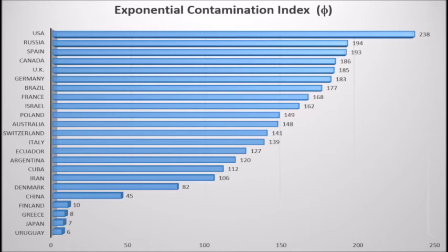We have very large numbers in this case, even for Brazil and France. If this number — the exponential contamination index phi — is a big number, it expresses a greater increase in the grouping of cases. For this index, we should look at the lower lines of this image: Finland, Greece, Japan, and Uruguay. We probably need to analyze those numbers because they indicate the increase is going very slowly.